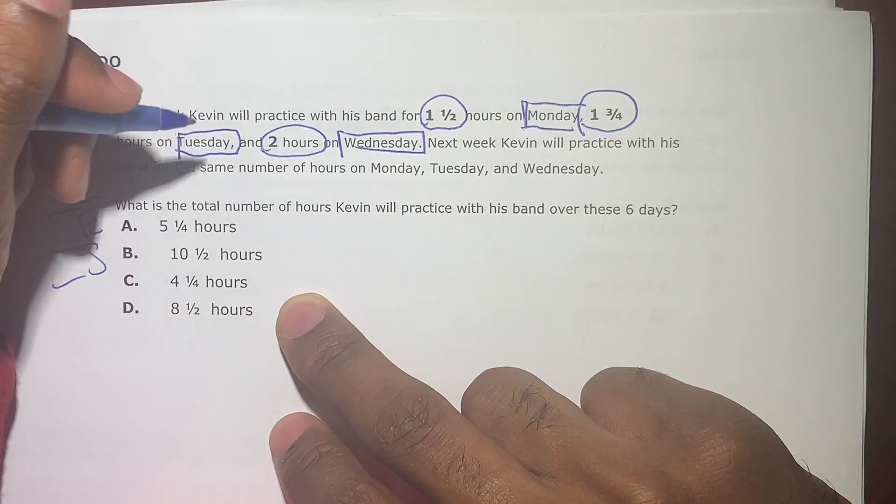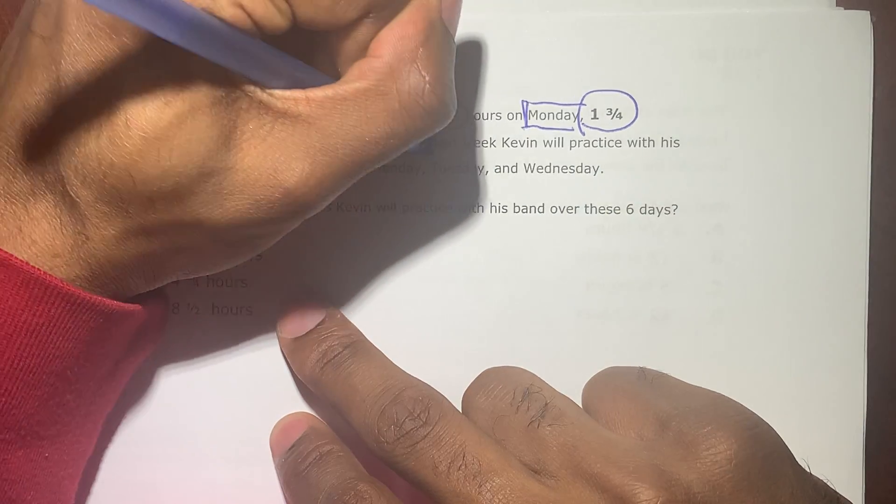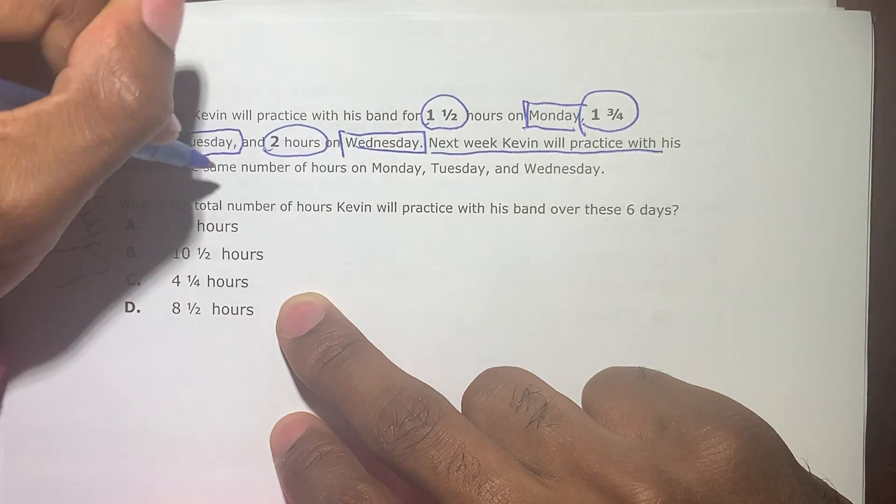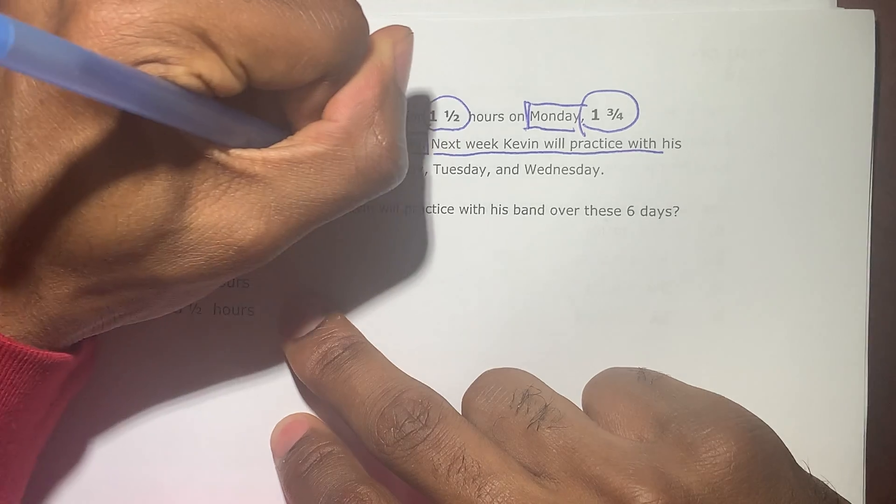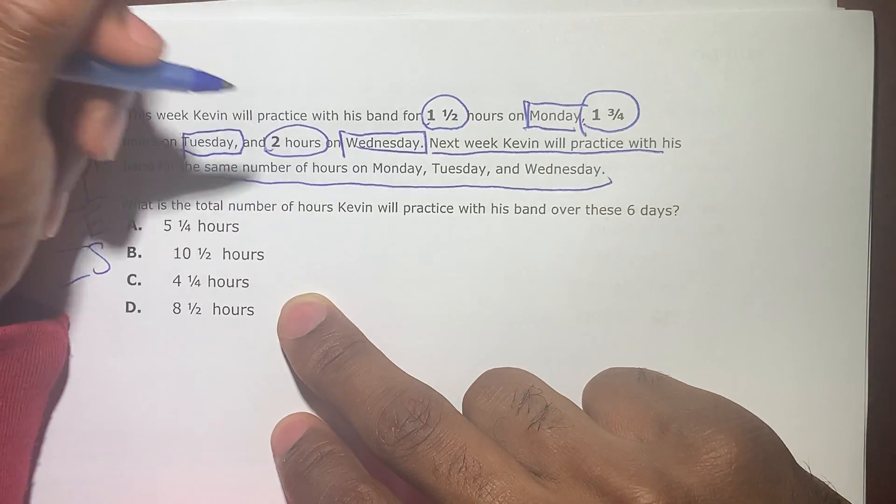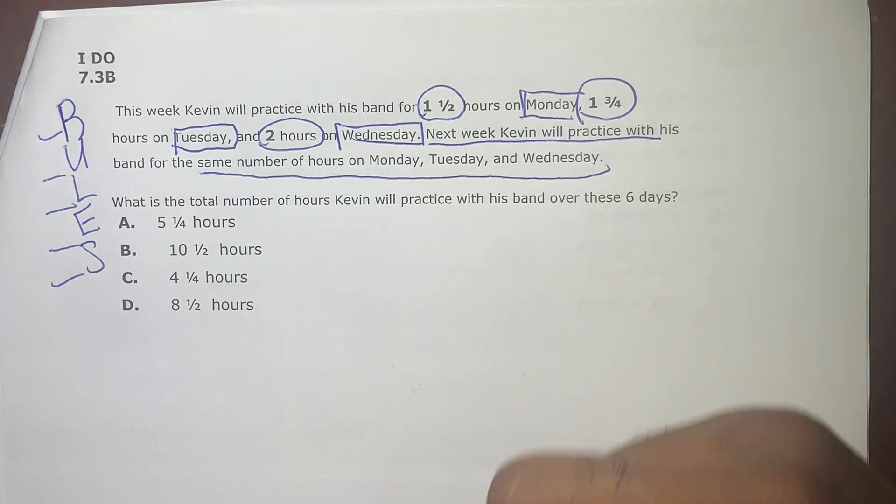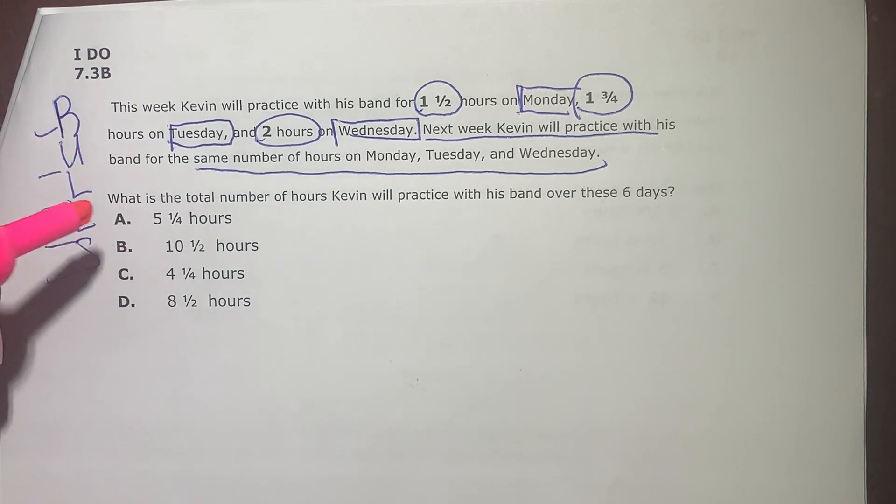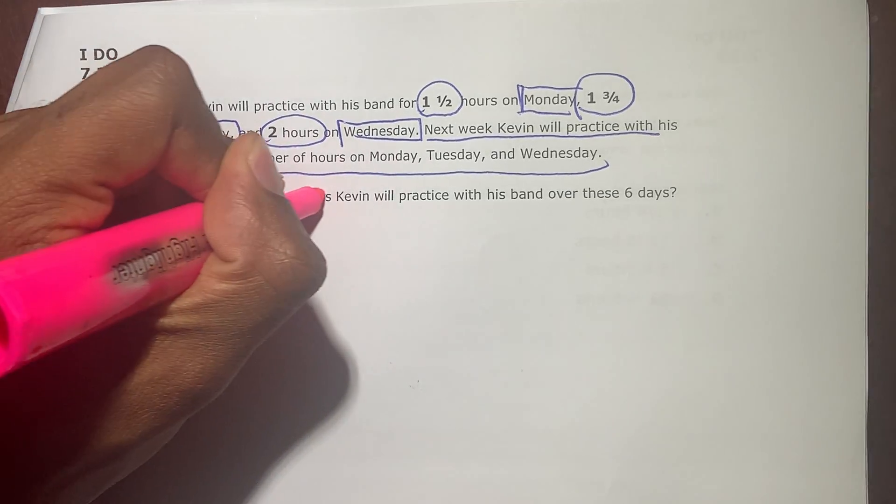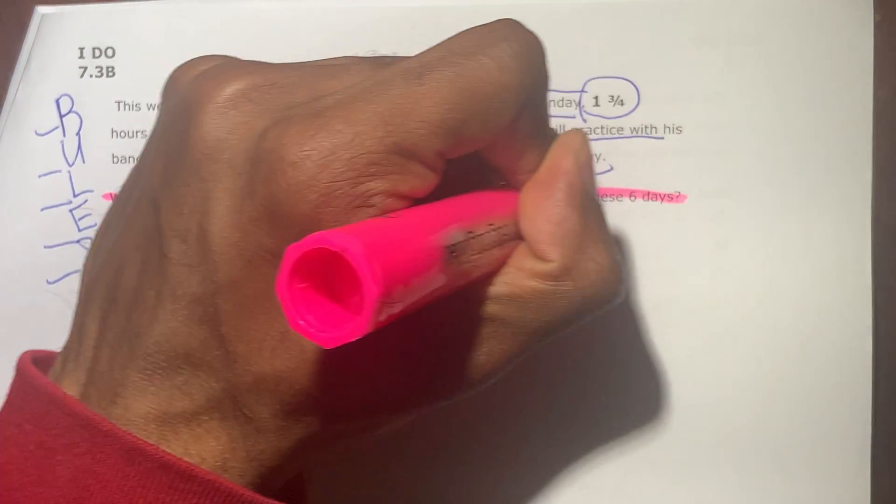Next week, Kevin will practice with his band for the same number of hours. This is important. Next week, Kevin will practice with his band for the same number of hours Monday, Tuesday, and Wednesday. What is the total number of hours Kevin will practice with his band over these six days?